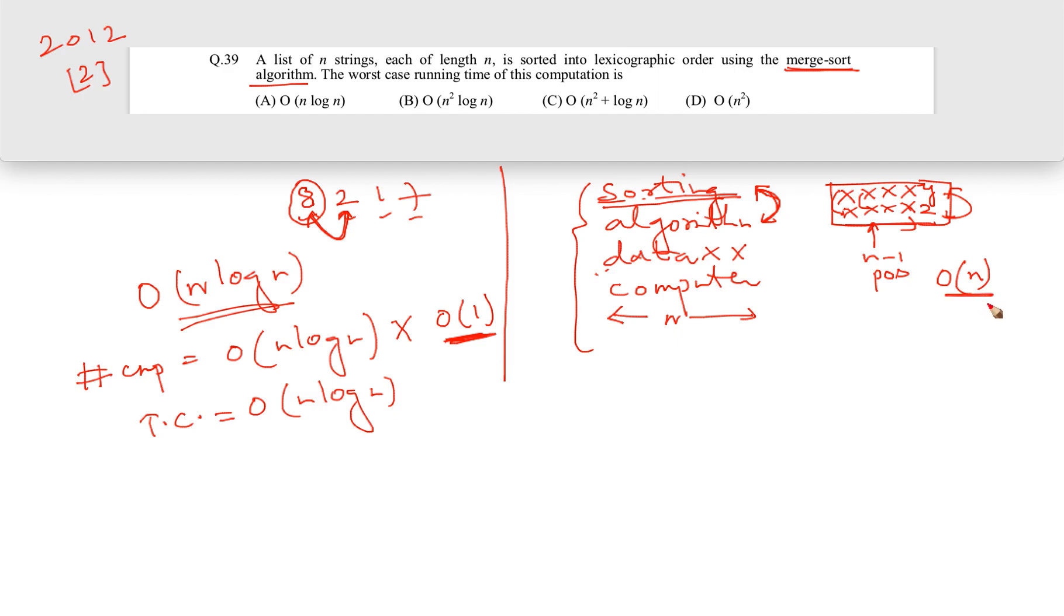That is why the total time complexity for our case is going to be - as per the algorithm, the structure of the merge sort - obviously n log n comparisons are going to be there, but each comparison is now going to take order n time. That is why overall time complexity is going to be order n square log n. And that is why the answer is B.